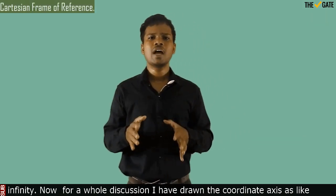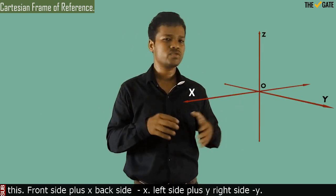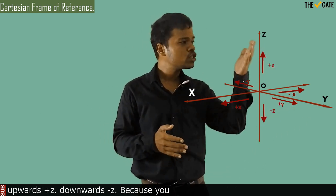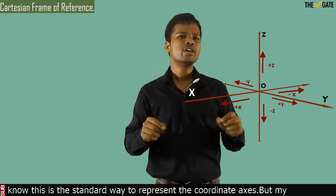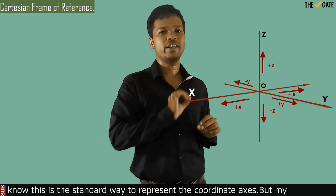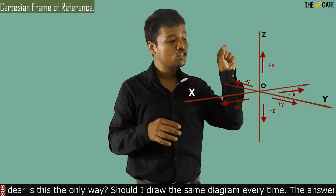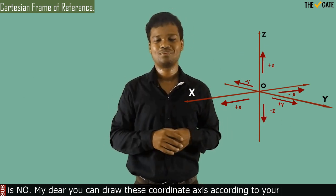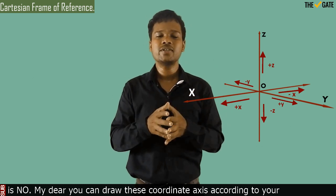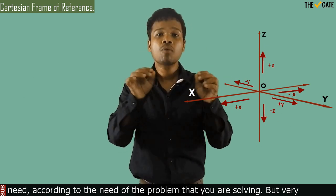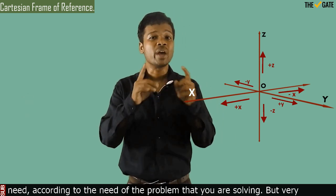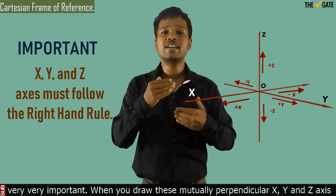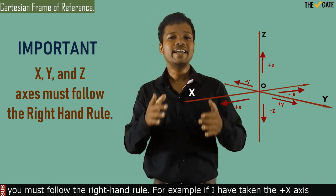For our discussion, the coordinate axes are drawn as: front side +X, back side −X, left side +Y, right side −Y, upwards +Z, downwards −Z. This is the standard way to represent the coordinate axes. However, you can draw the coordinate axes according to your need and the problem you are solving. But it is very important that when you draw the mutually perpendicular X, Y, and Z axes, you must follow the right-hand rule.